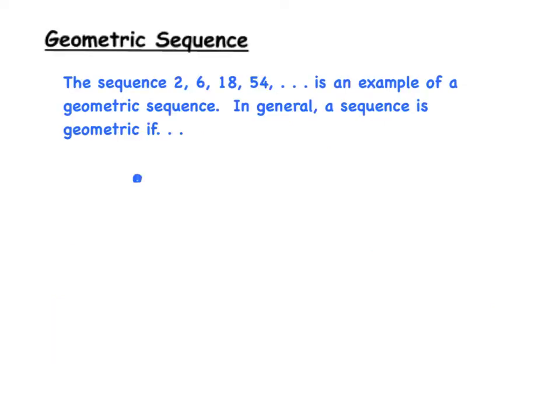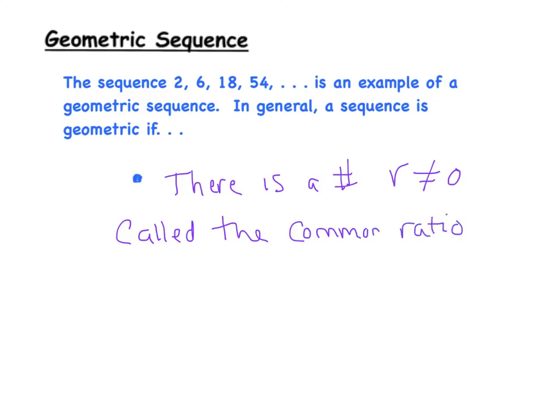So the definition of a geometric sequence: the sequence 2, 6, 18, 54 is an example of one, and in general a sequence is geometric if this following condition is met. There is a number r which can't be equal to 0—and I encourage you to think about why r can't be 0—called the common ratio such that...